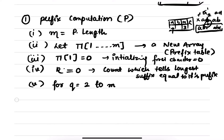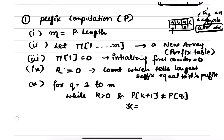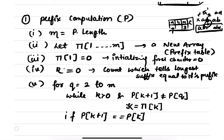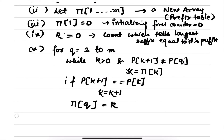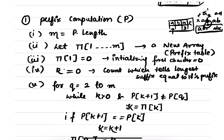Then we go for a loop: for q equals 2 to m, from the second character, we check prefix and suffix. While k is greater than 0 and pattern[k+1] doesn't match p[q], then k equals pi[k] — that is comparing prefix and suffix. If p[k+1] equals p[q], we increment k to k+1, and at the end we fill the prefix table and return the pattern.